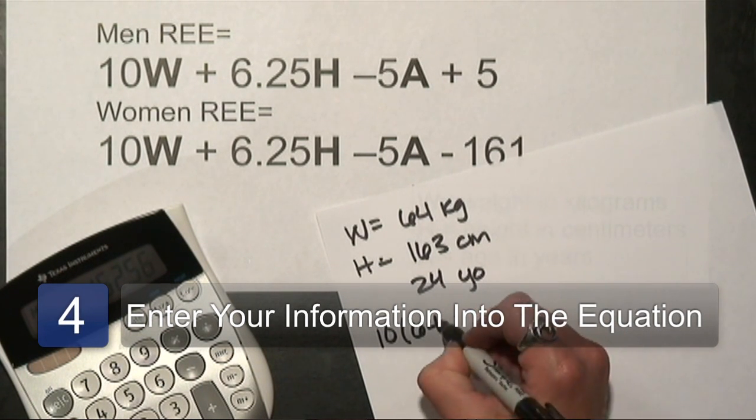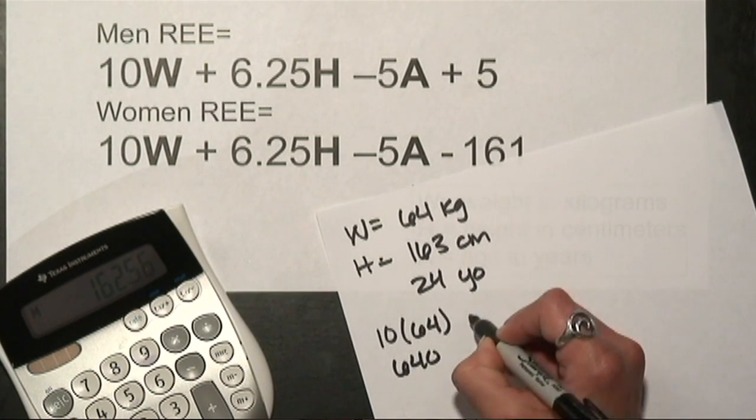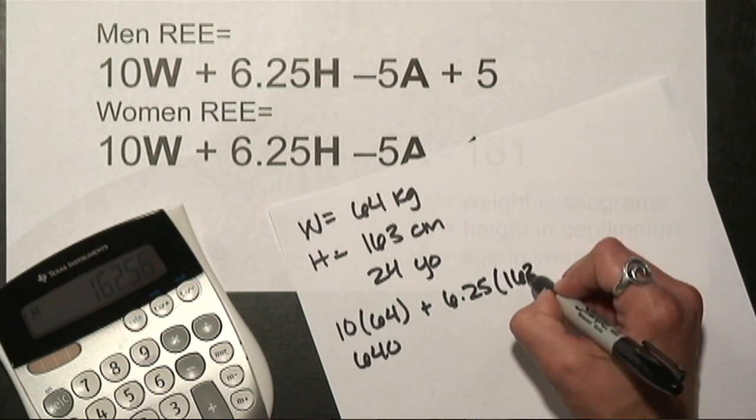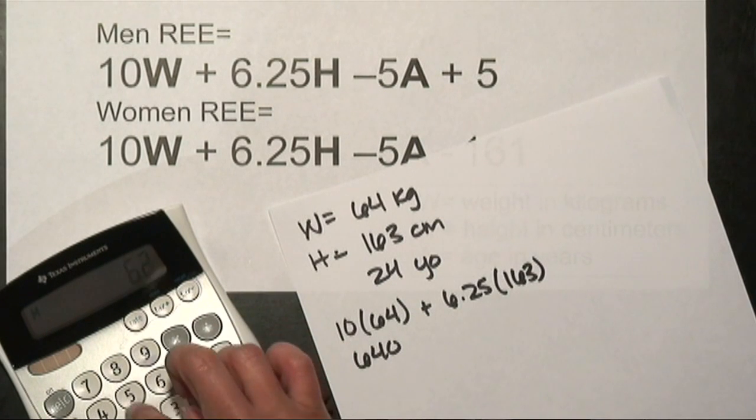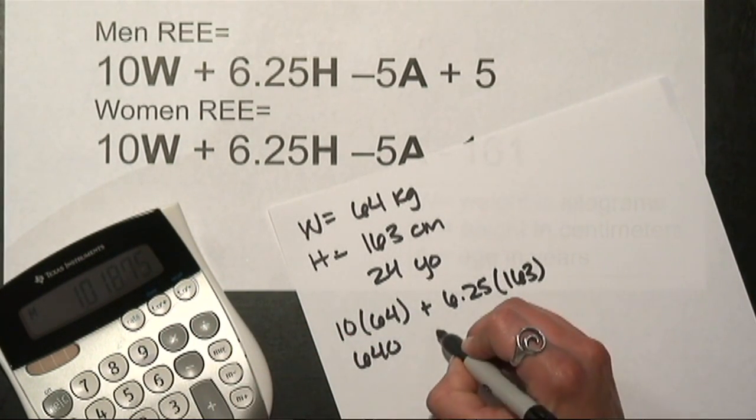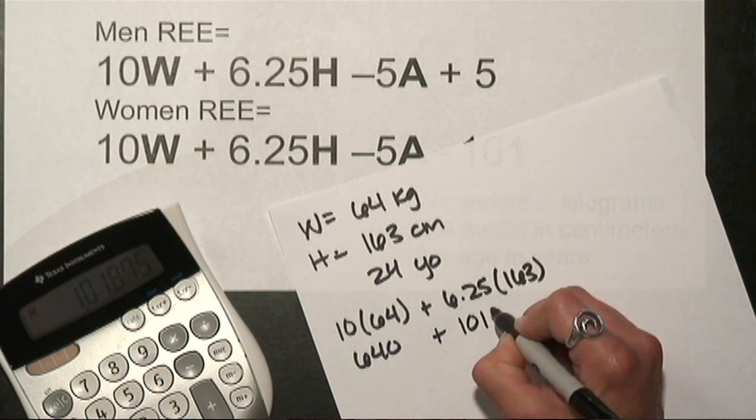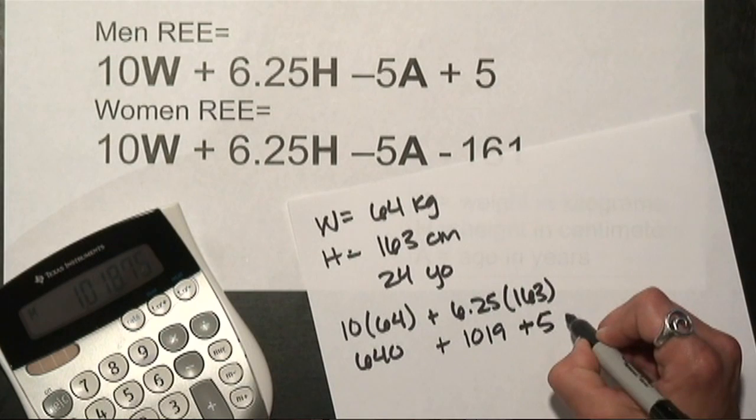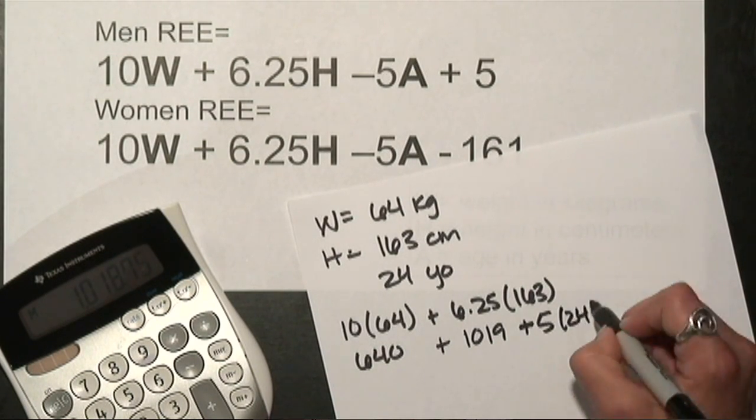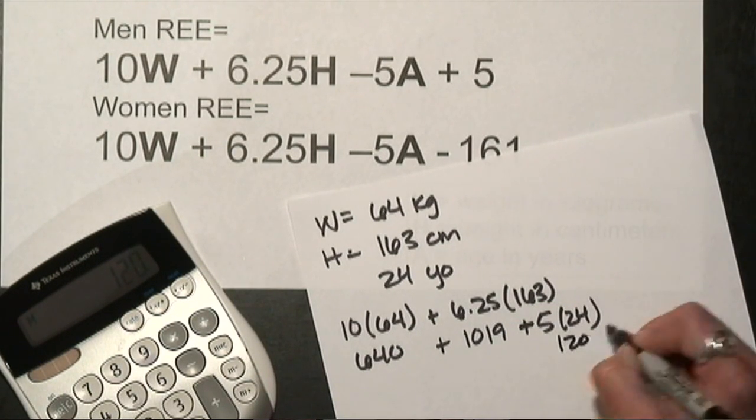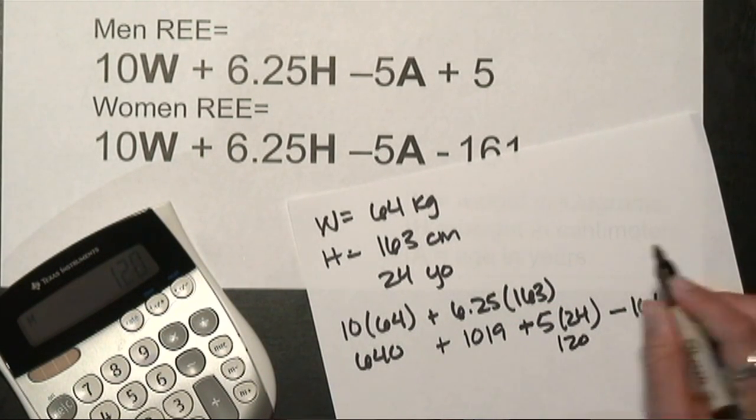So 10 times 64 is 640 plus my 6.25 times my height of 163, which I'm going to use my calculator for, which is just about 1019 minus 5 times my age. 5 times 24 is 120 minus the 161.